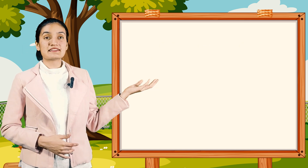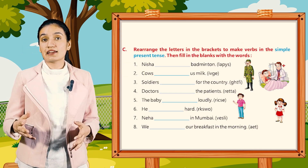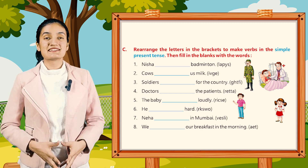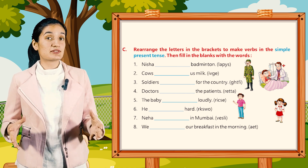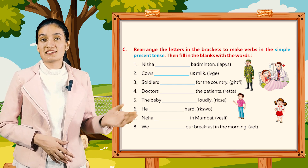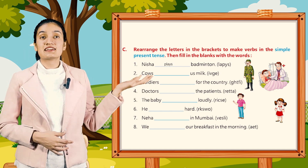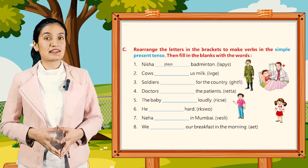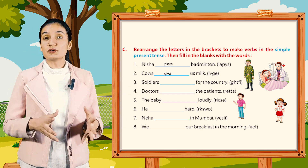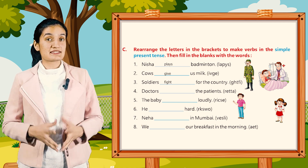Now let's see Part C — rearrange the letters in the brackets to make verbs in the simple present tense, then fill in the blanks with the words. First, Nisha dash badminton — the answer will be: plays. Second, cows dash milk — it will be: give. Third, soldiers dash for the country — it will be: fight.